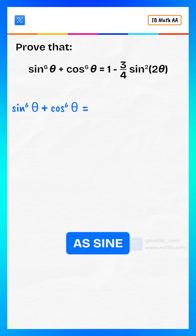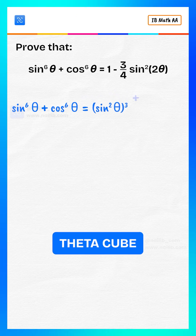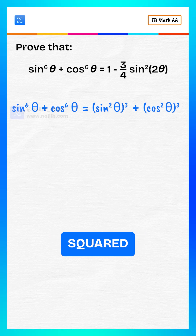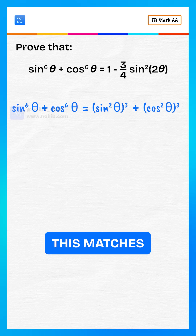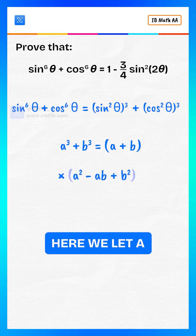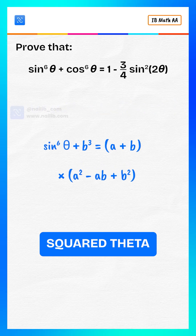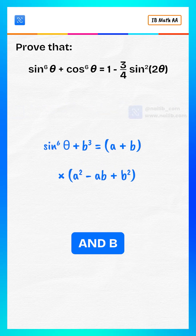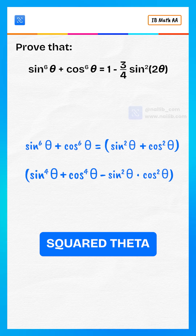This is the same as sine squared theta cubed plus cosine squared theta cubed. This matches the identity for the sum of cubes, where we let a equal sine squared theta and b equal cosine squared theta.